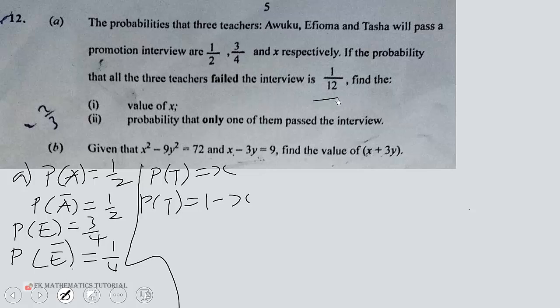all failed is 1 over 12. So when all failed, we have probability of A prime times E prime times T prime is equal to 1 over 12.